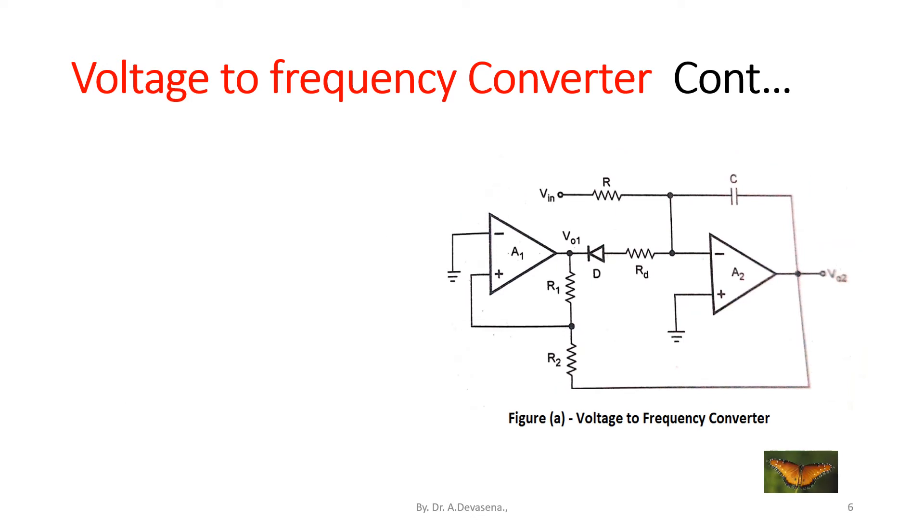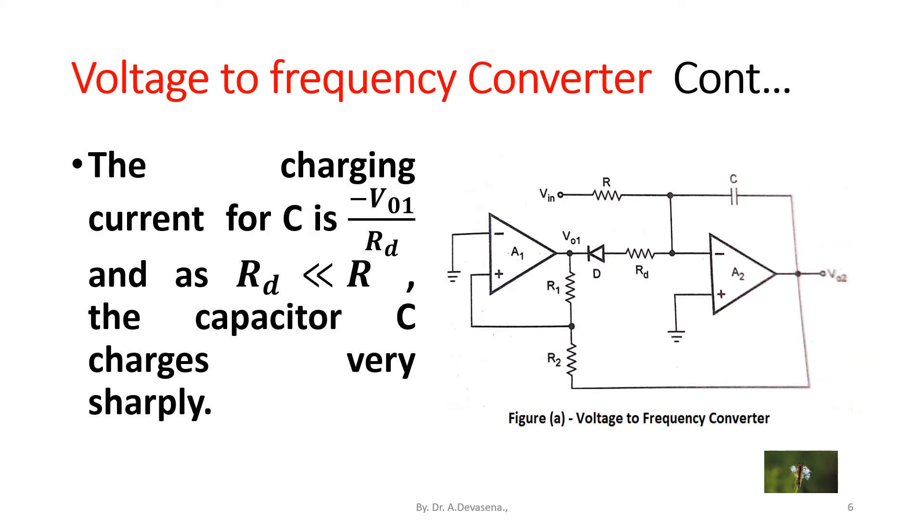The charging current for the capacitor C is minus V_o1 by R_T, and as R_T is very very less than R, the capacitor C charges very sharply.